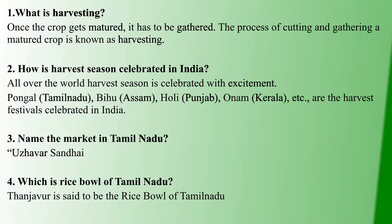In Tamil Nadu the celebration is Pongal, which falls in January — that is the harvest season. In Bihar and Assam the harvest festival is Bihu. In Punjab it is Holi time, and in Kerala it is Onam time. These are India's harvest festivals that people celebrate.